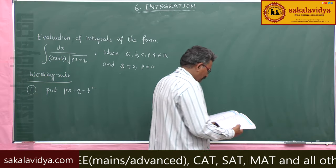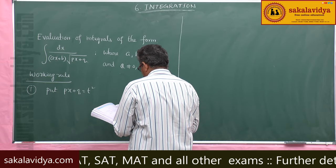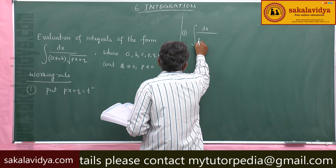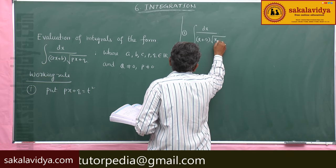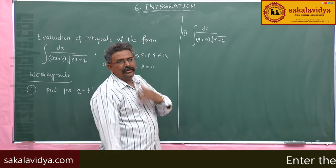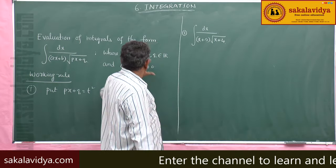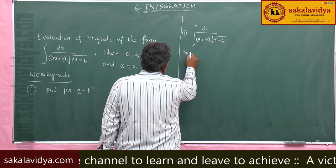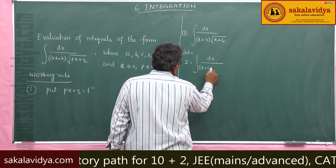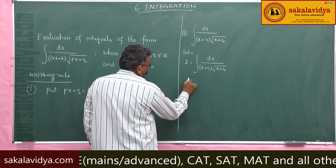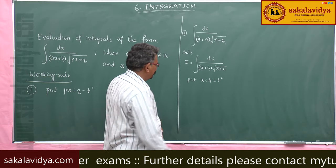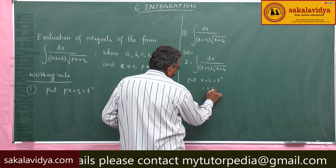Let us solve one model problem: evaluate ∫dx / [(x + 5)·√(x + 4)]. Let I = ∫dx / [(x + 5)·√(x + 4)]. Put x + 4 = t². Differentiating with respect to x: 1 = 2t·(dt/dx), so dx = 2t dt.